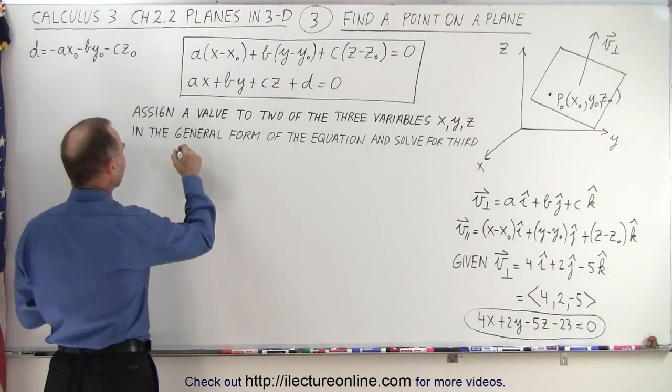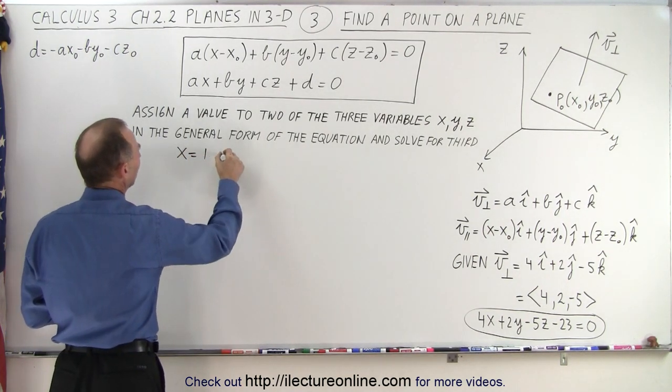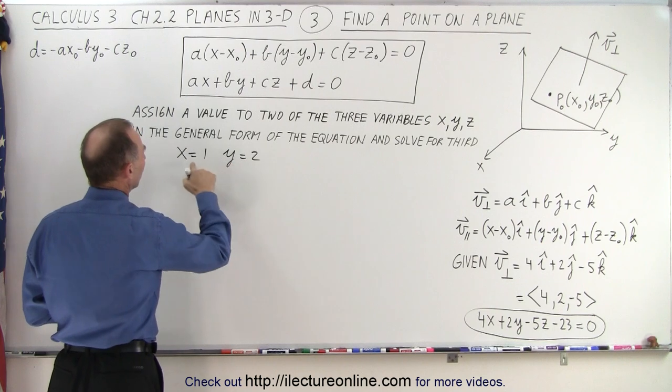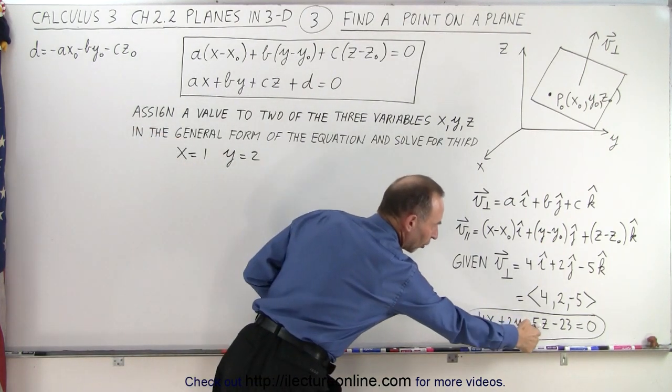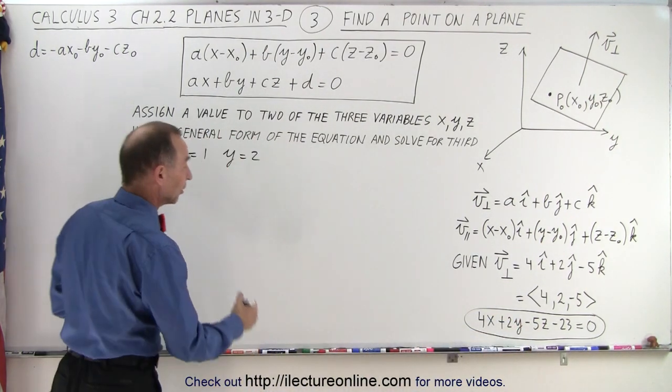So let's say that we're going to let x equals 1 and y equals 2. We then plug that into the general form to solve for the third variable z. So let's do that.